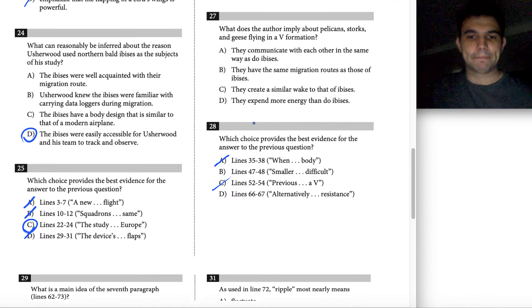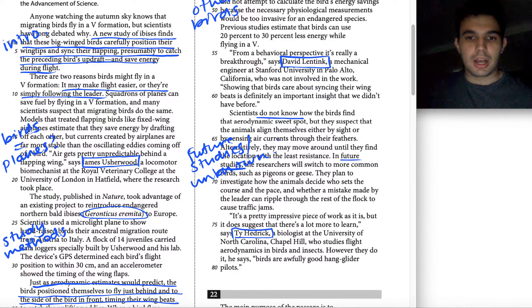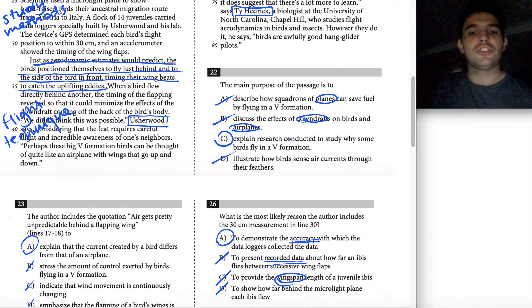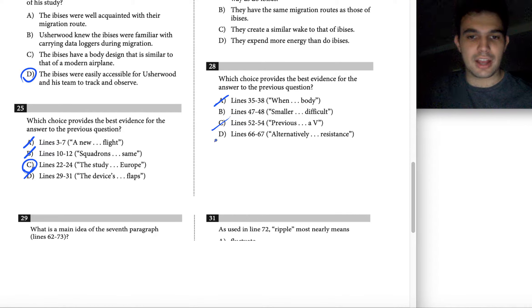How about D, 66 to 67? All right, so this quote is already pretty far away from our paragraph that we know is specifically talking about those birds that were in question, but let's see what it says regardless. Alternatively, they may move around until they find the location with the least resistance. Again, this is talking about birds in general, not specifically pelicans, storks, and geese. So I'm going to take it off the table and confirm that B is our strongest answer here.